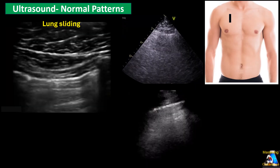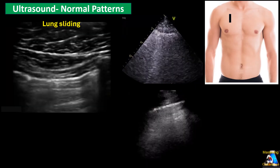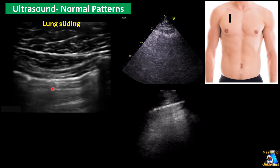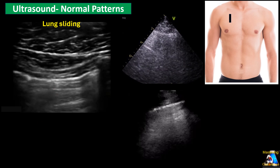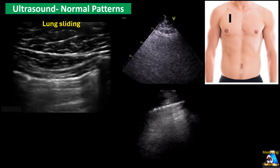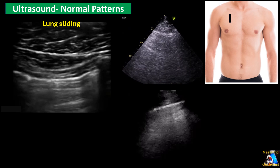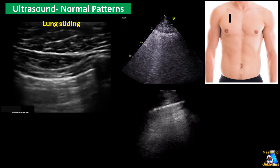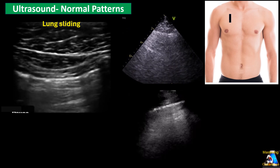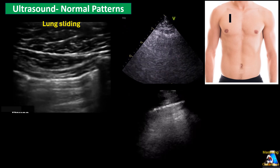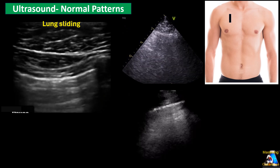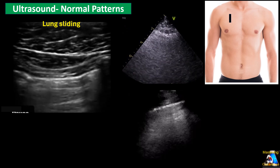As I mentioned, the ultrasound of the lung can only create an image from the skin to the pleura. Anything beyond the pleura will be artifact. And those artifacts, which I'm going to talk about shortly, are important for the evaluation of lung pathology.